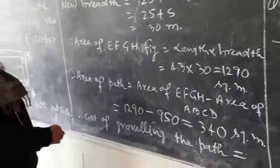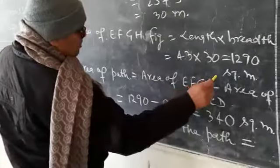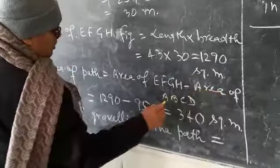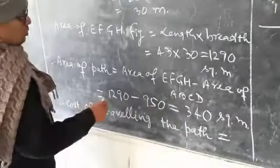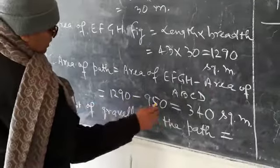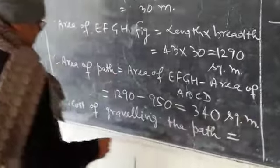Therefore, area of path is equal to area of figure EFGH minus area of figure ABCD. Therefore, it will be equal to 1290 minus 950 which will be equal to 340 square meter.